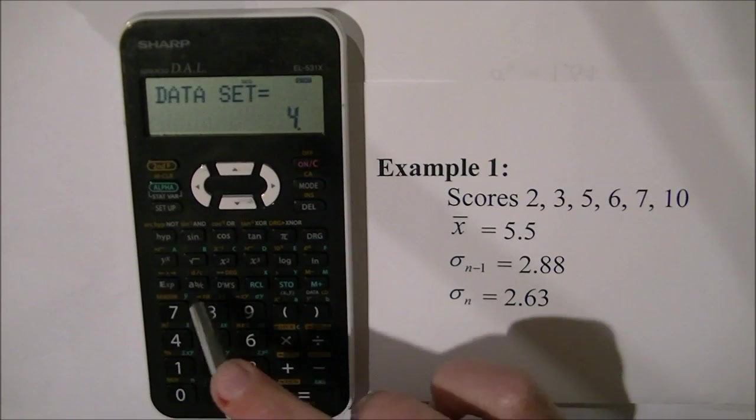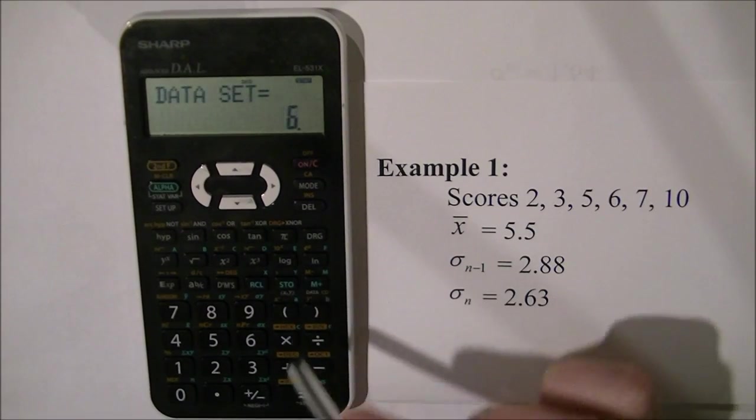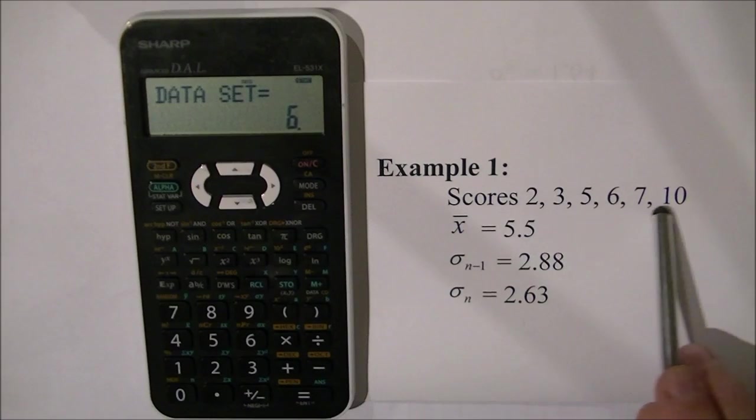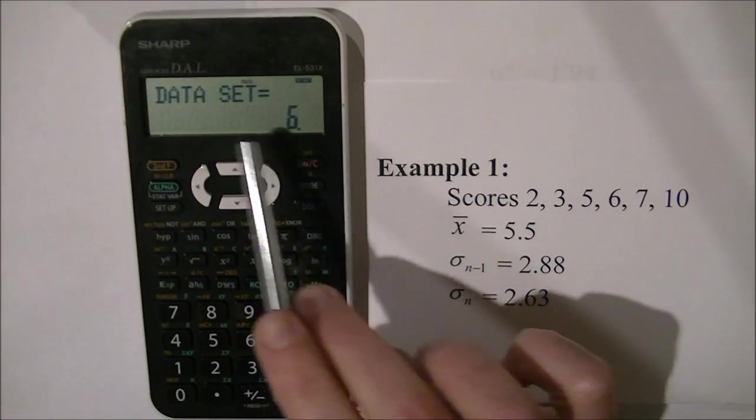M plus, 7, M plus, and 10, M plus. I've now entered the 6 scores and it tells me that I have 6 items in my data set.